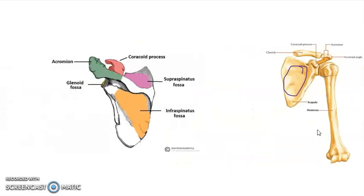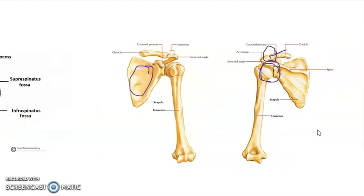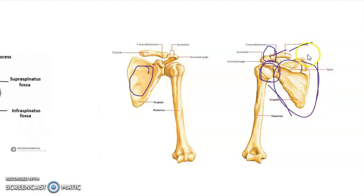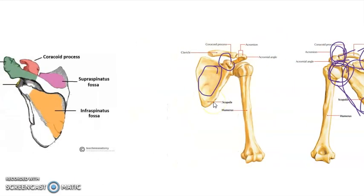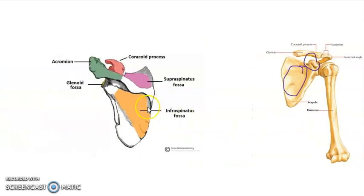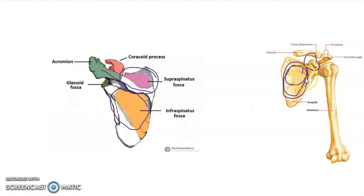Let us do a short recap on what we have said about the scapula. It's got two surfaces — the anterior and posterior. It's got three borders: the medial border, the superior border, and the lateral border. It's got three angles: the superior angle, the inferior angle, and the lateral angle. It's also got three processes: the spine, the acromion process, and the coracoid process. It's also got fossae — on the posterior surface, it has the infraspinatus fossa, below the spine, and the supraspinatus fossa above. And on the anterior surface, it has the subscapular fossa. This is all you need to know about the scapula.